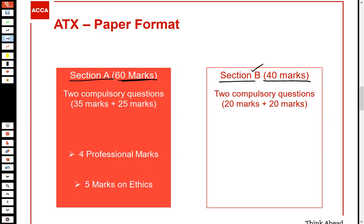Within Section A, there are two questions: one question is 35 marks and one question is 25 marks. All questions are compulsory. In Section B, there are two questions of 20 marks each. One important point to remember: within Section A there will always be four professional marks, just like all other ACCA professional papers.